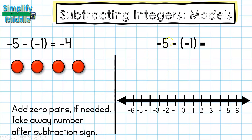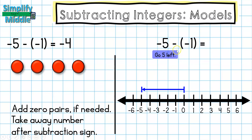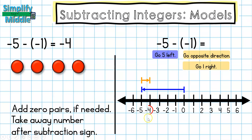On my number line, I'm going to go 5 to the left. Then I'm going to go the opposite of 1 to the left, so I'm going to go 1 to the right, which will land at negative 4.